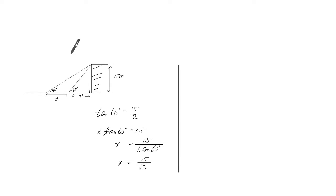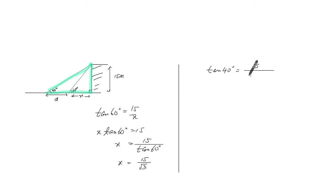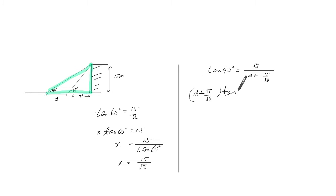Now let's take a look at the overall bigger right angle triangle. Using the tangent ratio again, tangent of 40 is equal to 15 over d plus x, where x is 15 over root 3. So we can multiply both sides by the denominator, which is d plus 15 over root 3. Tangent of 40 times that equals 15. Dividing both sides by tangent of 40, you get d plus 15 over root 3 equals 15 over tangent of 40.